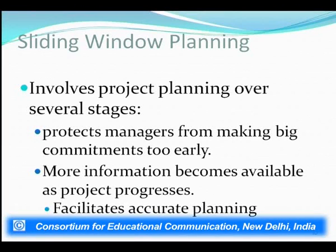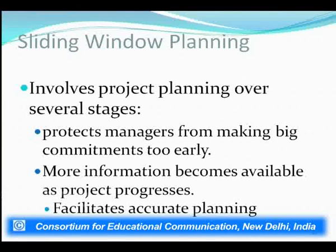There are two types of planning. One is sliding window planning for voluminous or large high-budget projects. Because software projects are intangible, it is very difficult to know all resources, staff, and activities in advance. In sliding window planning, planning is done as the project progresses — as activities progress, things become clearer and planning is done accordingly.